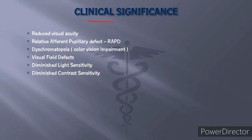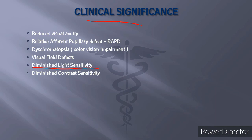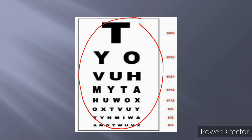Whenever there is disease of the optic nerve, we will see the following signs and symptoms: reduced visual acuity; relative afferent pupillary defect, or RAPD; dyschromatopsia or color vision impairment — in optic nerve disease, red and green color vision is affected; visual field defects; and decreased light sensitivity. The contrast sensitivity will also be decreased.